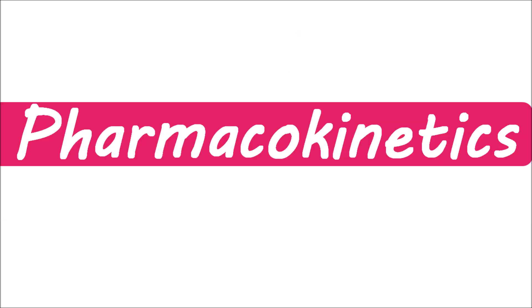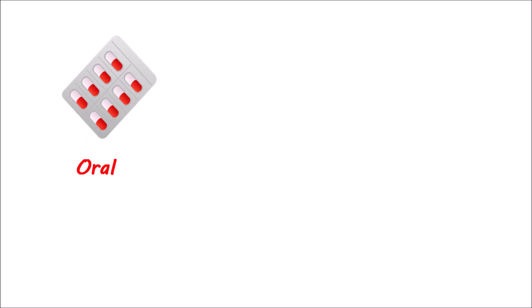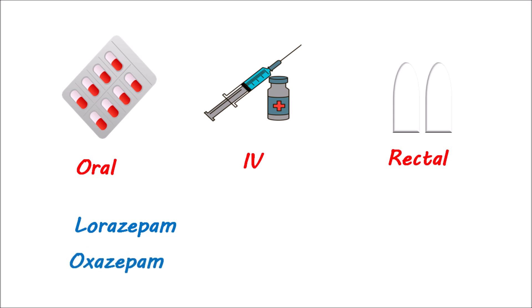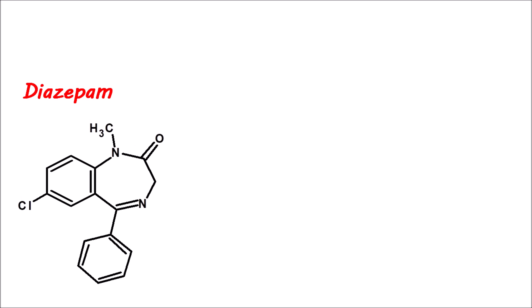Pharmacokinetics of benzodiazepines: benzodiazepines can be given in a variety of ways. They can be given by the oral route, the IV route, or the rectal route as suppositories. A few of the benzodiazepines, such as lorazepam and oxazepam, show poor oral absorption due to their polar nature. If we look at the metabolism, benzodiazepines mainly undergo two types of metabolic reactions. Let's take the example of diazepam — this is the structure of this drug.